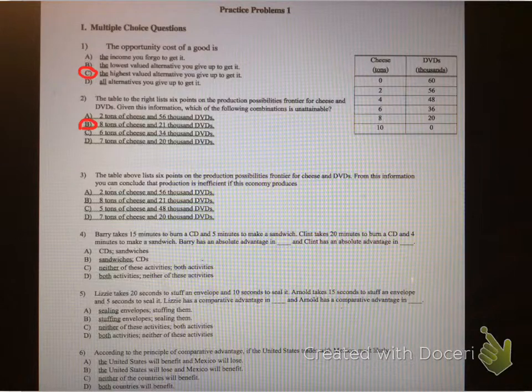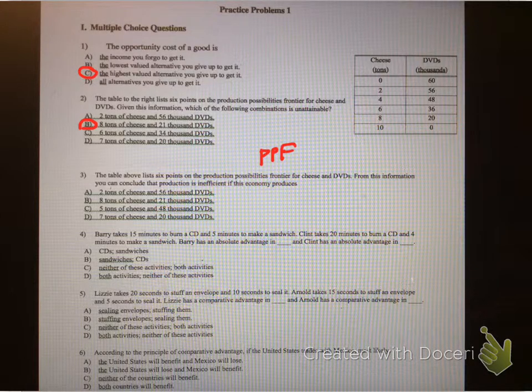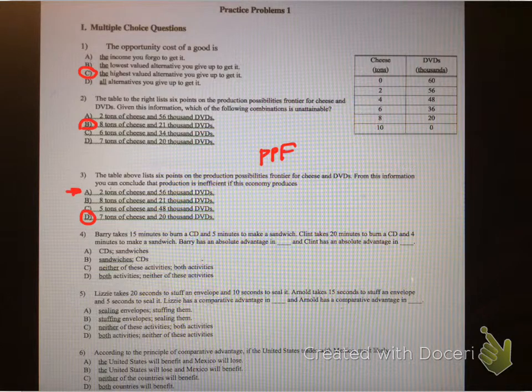Okay, third one. The table above lists six points on the production possibilities frontier, that's the PPF, for cheese and DVDs. From this information, we can conclude that the production is inefficient if this economy produces. Well, like we discussed before, this one was inefficient, because you weren't maximizing your resources, so I believe the answer would be D. Again, this one is the maximum amount, so that's good. This one would be going over, et cetera.